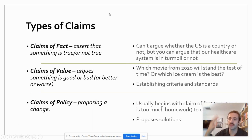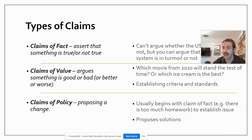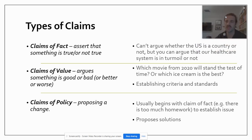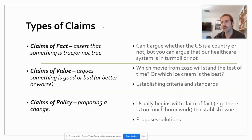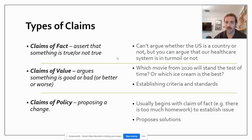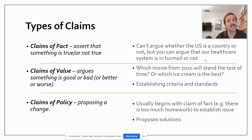In addition to claims being good or bad — valid or too easily verifiable — there are different types of claims we can use to analyze how an author builds their argument. The first is a claim of fact, which asserts that something is true or not true. For example, you can argue whether our healthcare system is in turmoil or not — I'm stating that as a claim of fact. It may or may not be true based on your perspective, and there's a lot of gray area in a word like 'turmoil.'